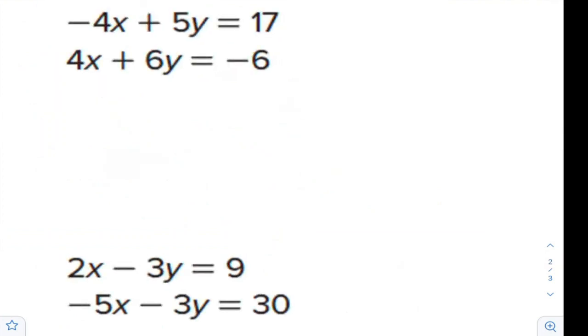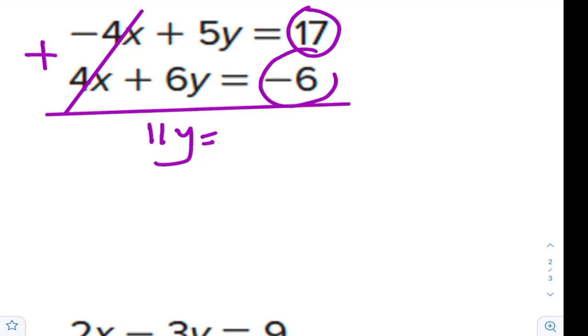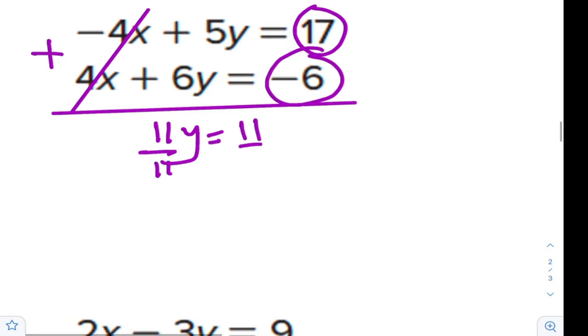Let's have more practice. Now in this example, it is very clear here that you can observe we have negative 4x and here we have 4x. Negative 4x and 4x, so what will you do? We will add because they are opposites to eliminate x. If you are able to eliminate one of the variables directly by addition or by subtraction, do it. It's better to use elimination rather than substitution. 5y plus 6y is 11y, 17 plus negative 6 is 11.